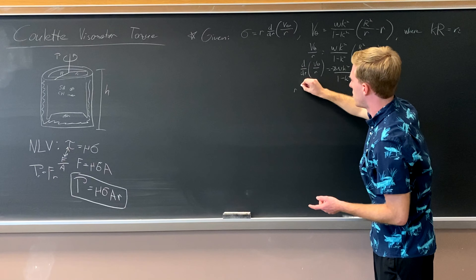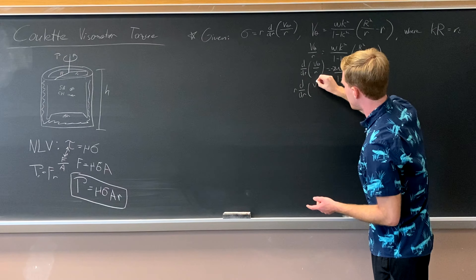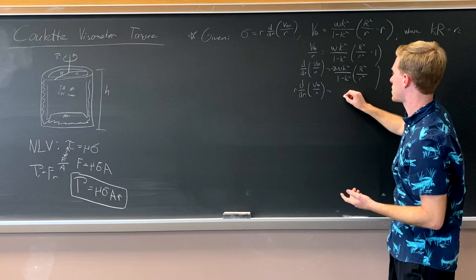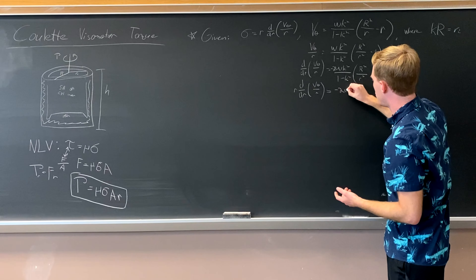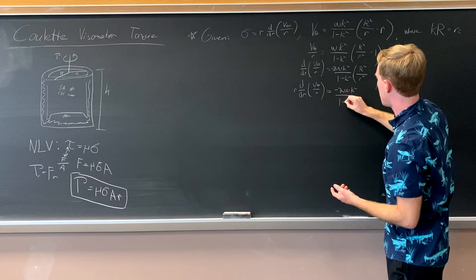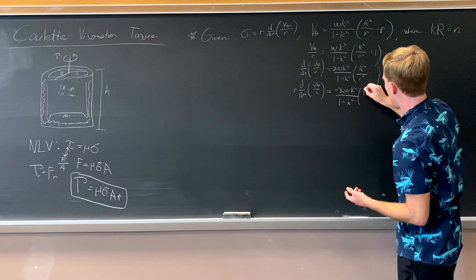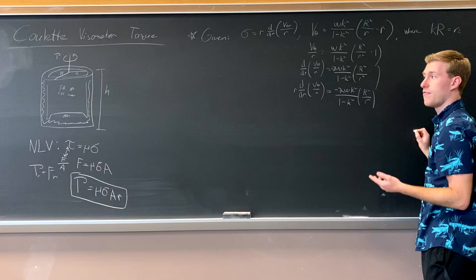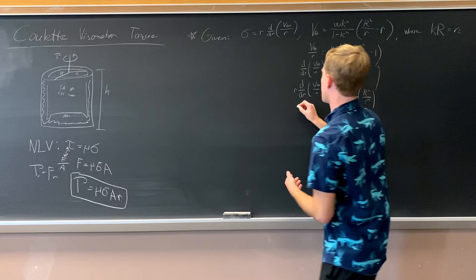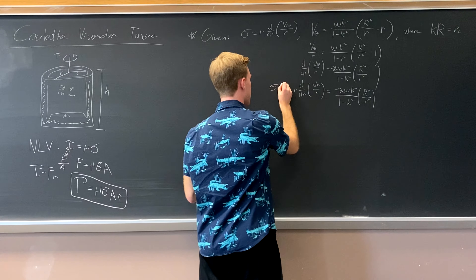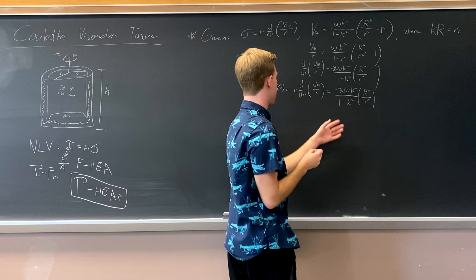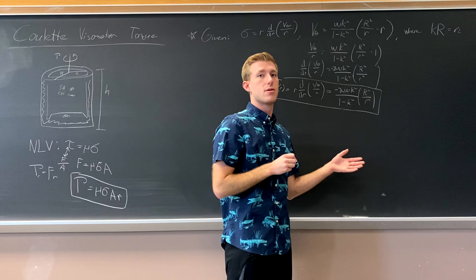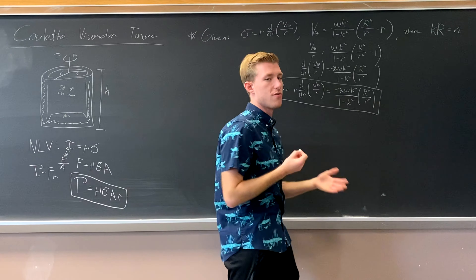Now we multiply by r. So r times d/dr of (v_theta / r) — multiplying by r decreases the power on the bottom of the fraction by 1. This gives us negative 2 omega k squared over (1 minus k squared) times capital R squared over r squared, where capital R is the radius of the larger cylinder and r is any radius. This is our shear rate for any radius of either cylinder.